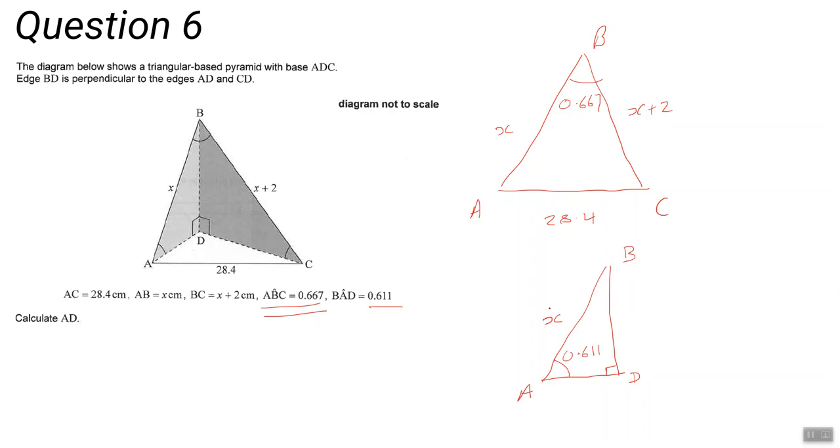So we've got a right-angle triangle. We know x from previously, we know this angle, so we can work out the length of AD.